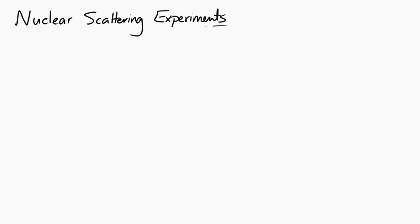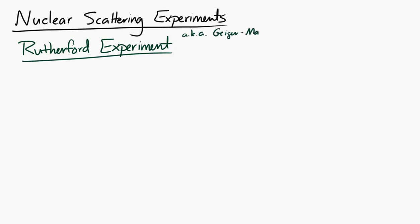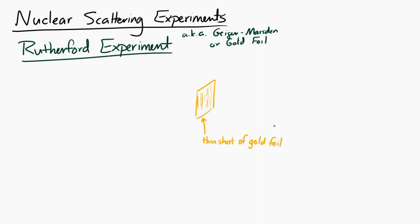Let's take a look at nuclear scattering experiments. We'll start with the original one, the Rutherford experiment, also called the Geiger-Marsden experiment, also called the gold foil experiment. Here we have a very thin sheet of gold foil, just a few gold atoms thick, and we're going to launch alpha particles at it.